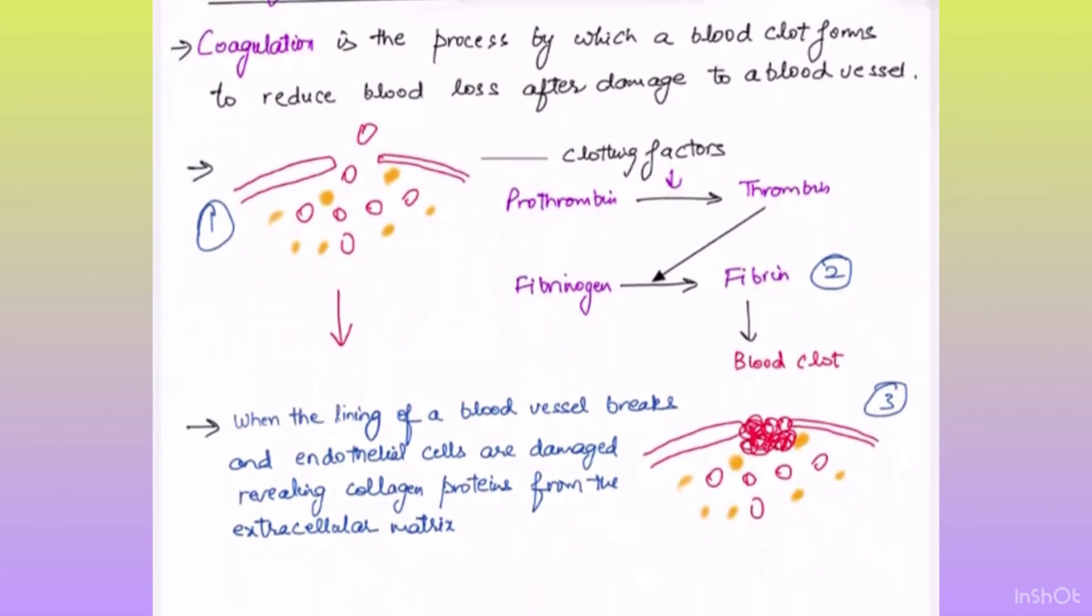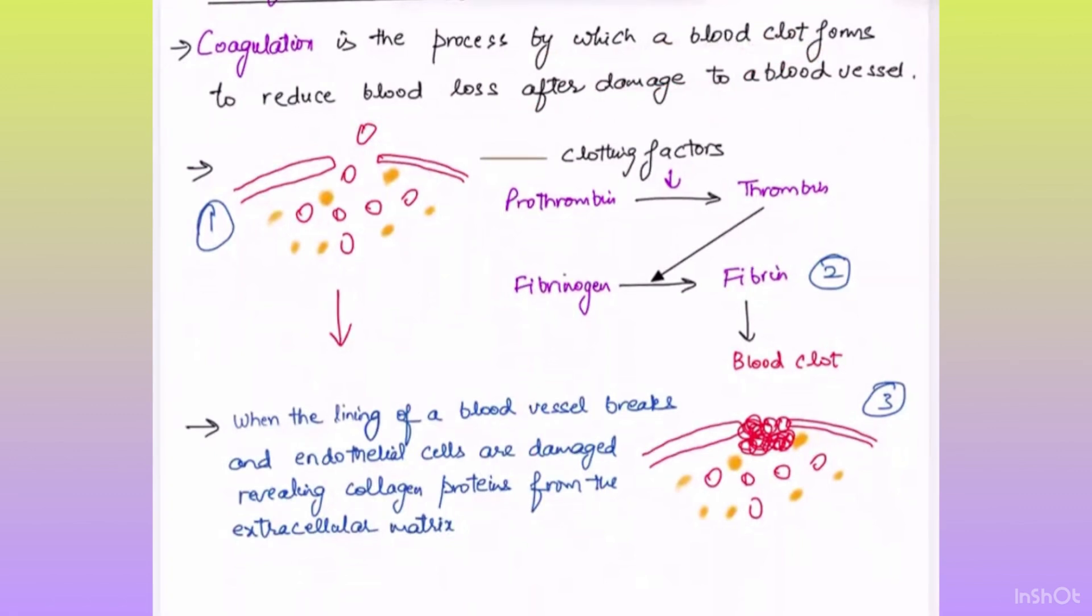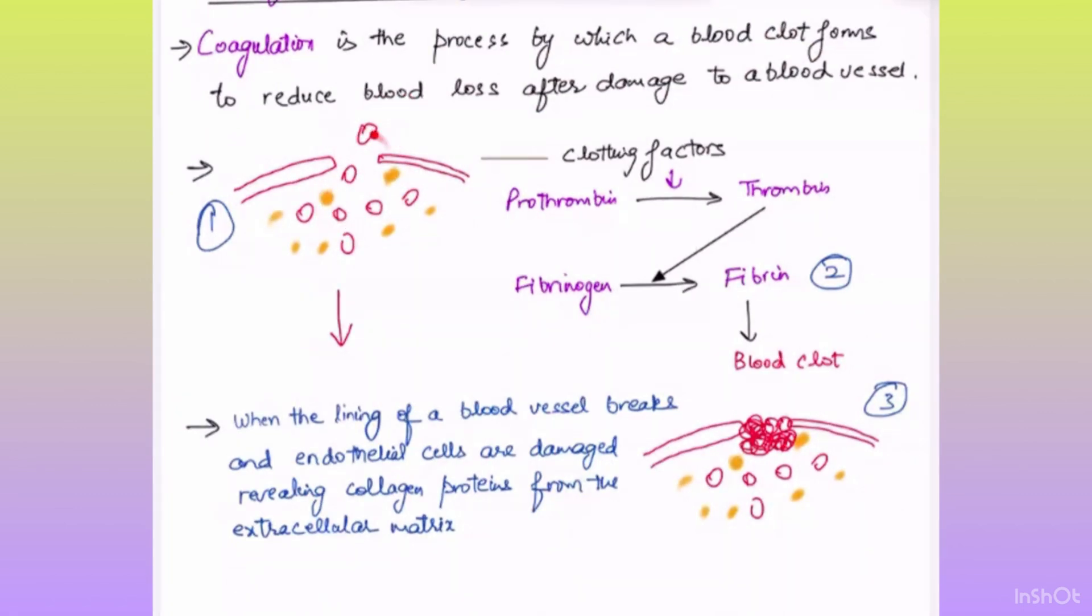Coagulation is the process by which a blood clot forms to reduce blood loss after damage to a blood vessel. Whenever a blood vessel is damaged, a clot is formed and this process is called coagulation.